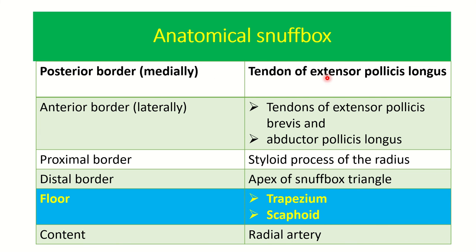A correction: in the previous slide I said anterolateral — it is not anterolateral, it is posterior medial. The posterior medial boundary has only one tendon: the extensor pollicis longus. The anterolateral boundary has two important tendons: extensor pollicis brevis and abductor pollicis longus. So the posterior medial boundary is formed by extensor pollicis longus, and the anterolateral is formed by extensor pollicis brevis and abductor pollicis longus.